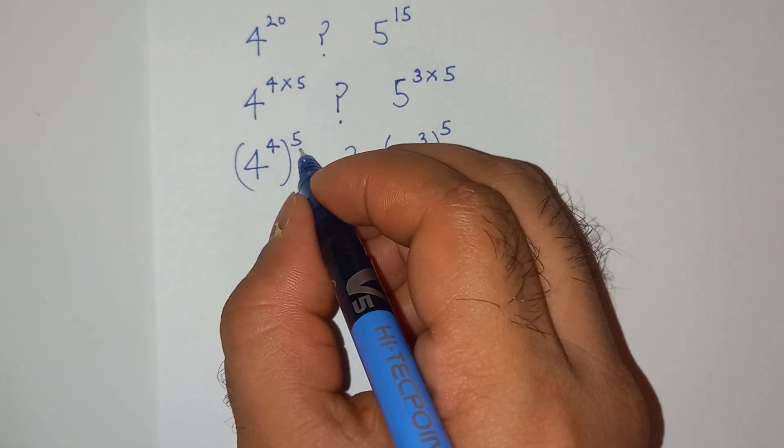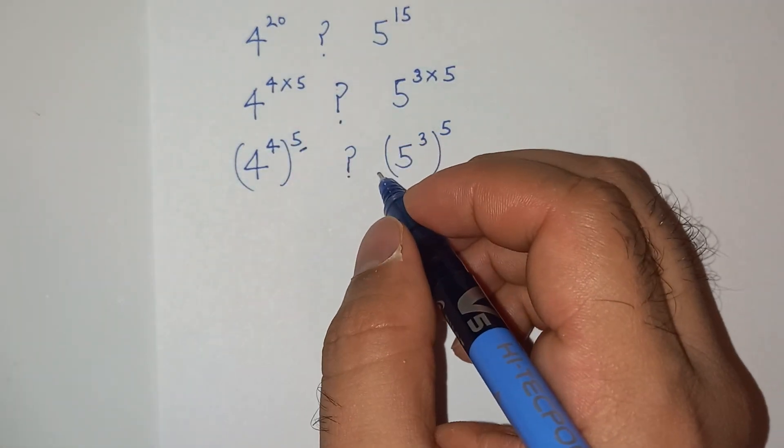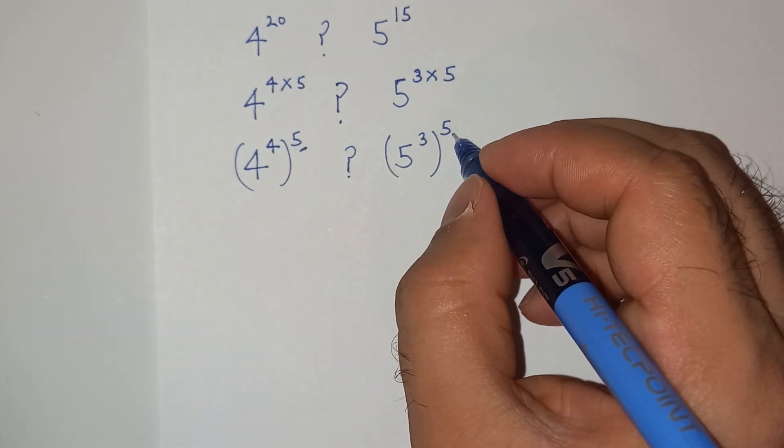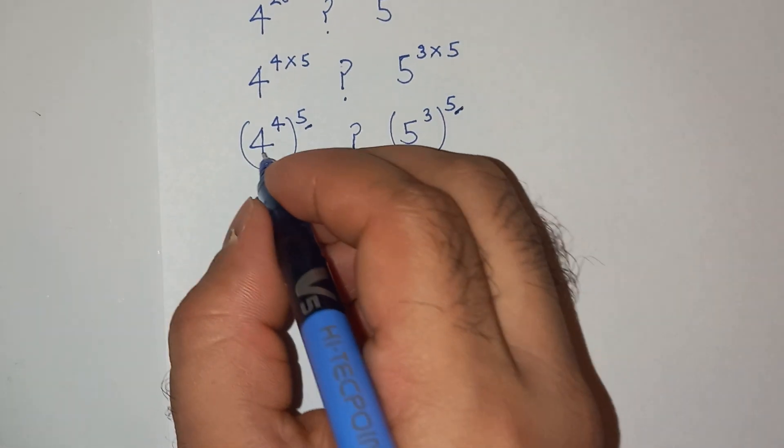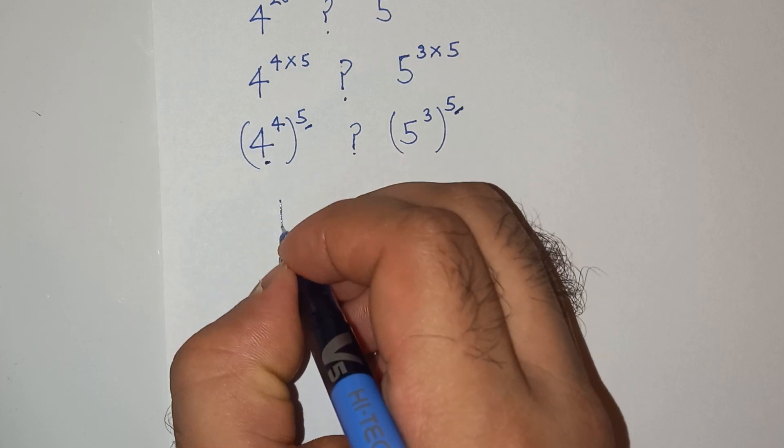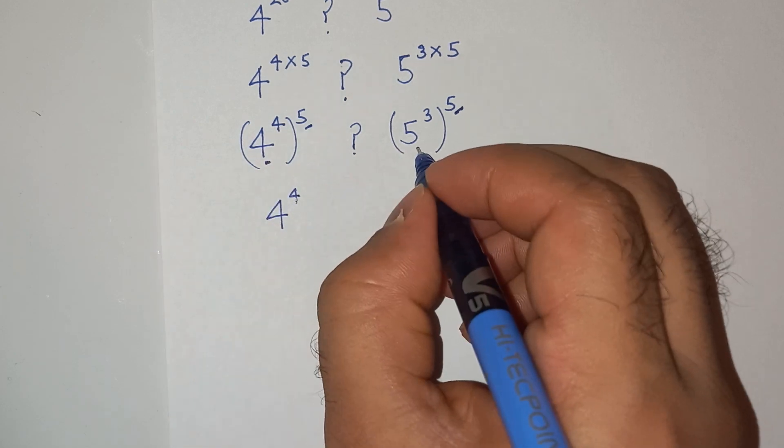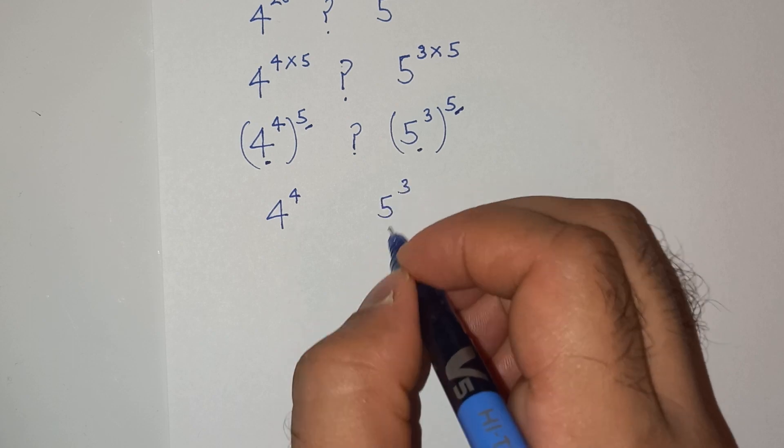Now you can see this 5 exponent on the left hand side is same as exponent on the right hand side 5. So we have to compare this term 4 power 4 with this term 5 power 3.